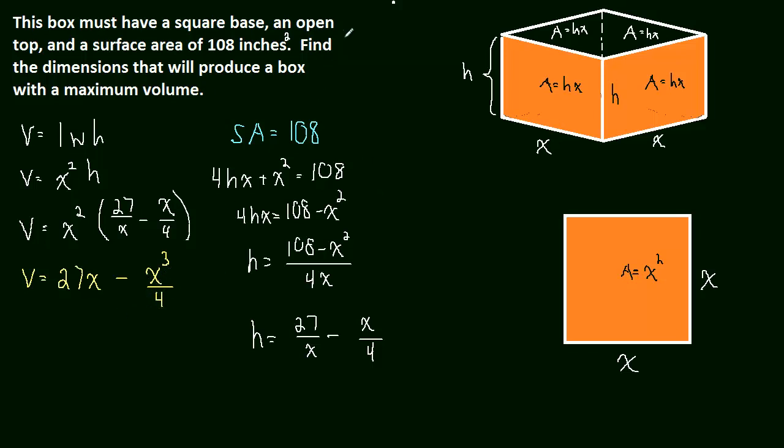We're almost ready to take the derivative, but we do have to do one more thing. This is actually a pretty important step. Try to remember to not overlook it when you're doing these problems. The step that we're going to do right now is find the domain of the function, of the volume function. What is the biggest and the smallest x could possibly be?